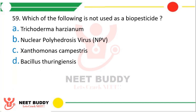Question number 59: Which of the following is not used as a biopesticide? Trichoderma harzianum, nuclear polyhedrosis virus, Xanthomonas campestris, or Bacillus thuringiensis. The correct answer is Option C; Xanthomonas campestris is not used as a biopesticide.